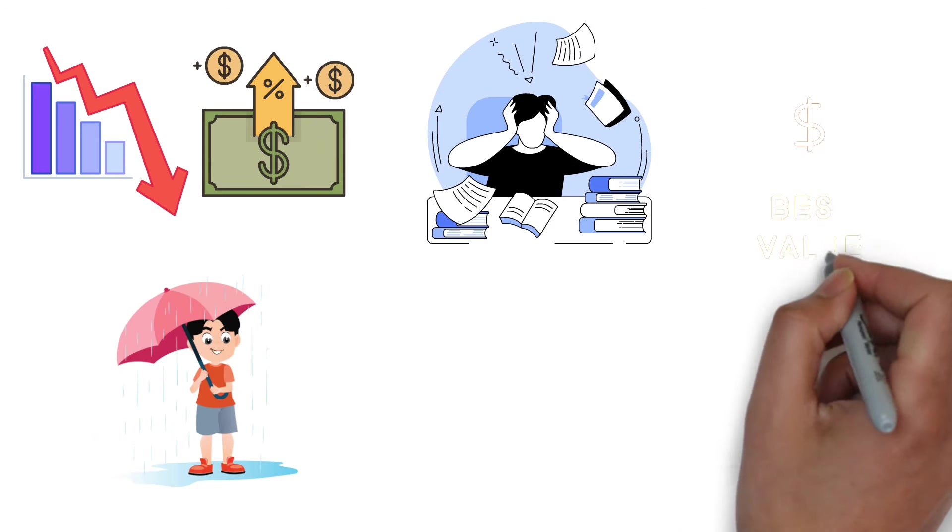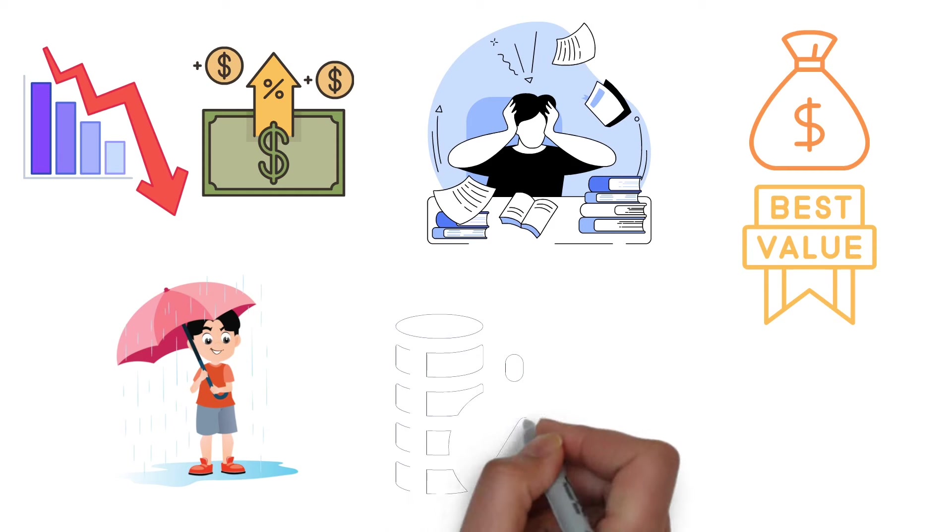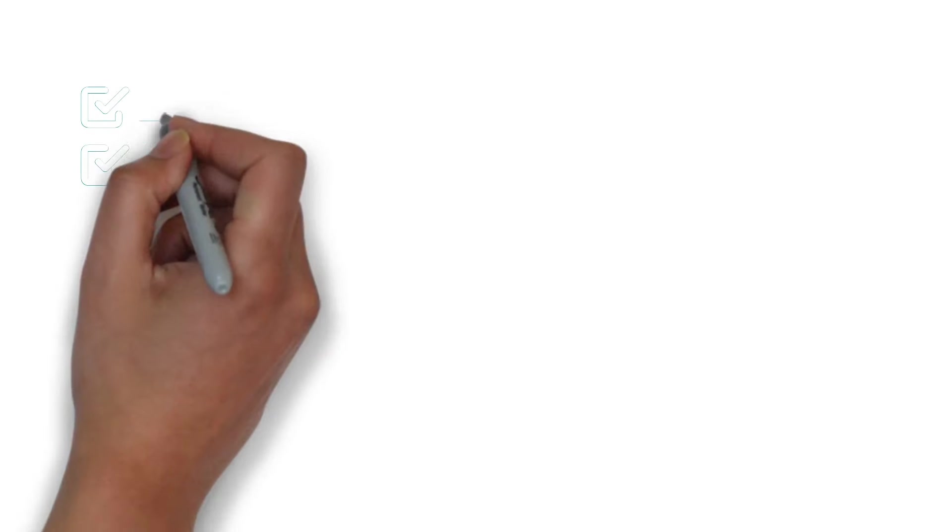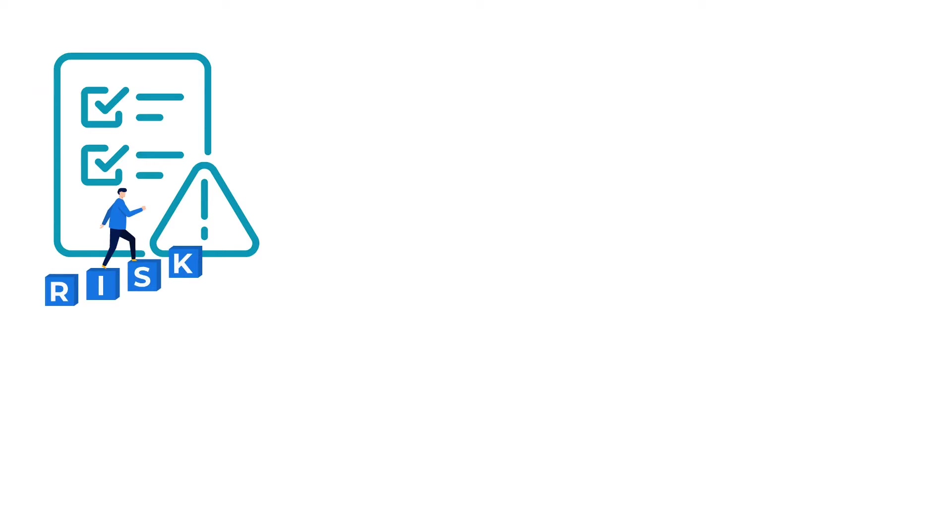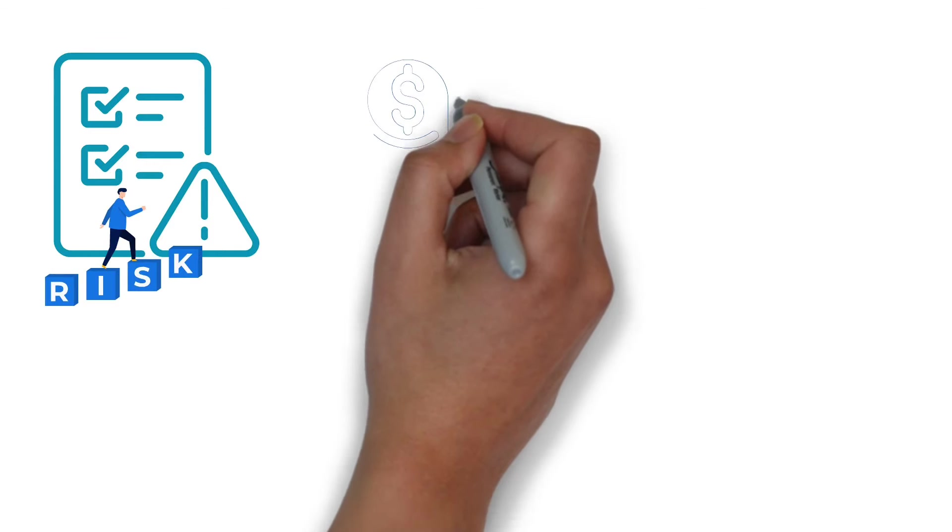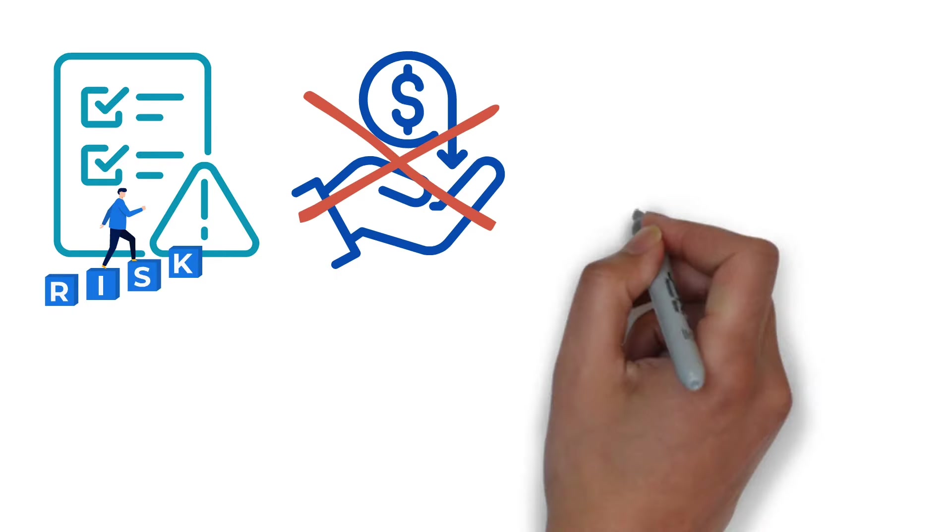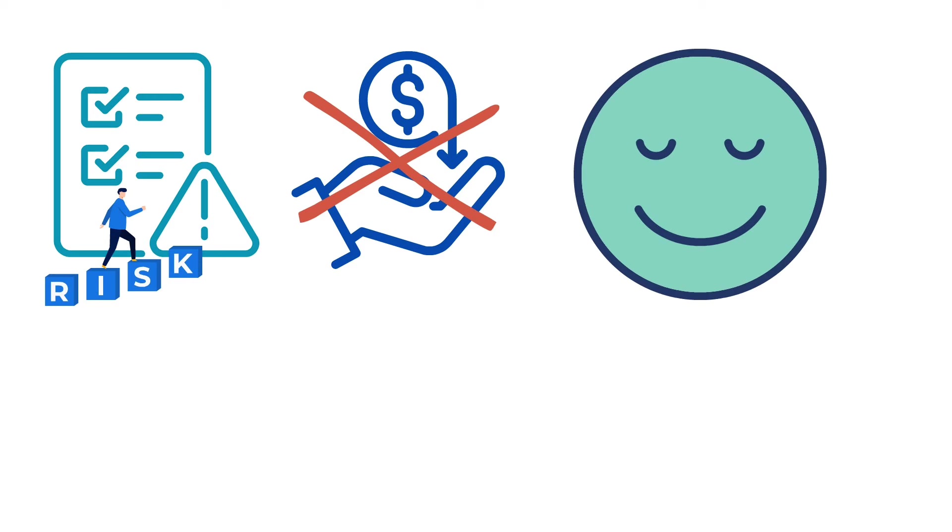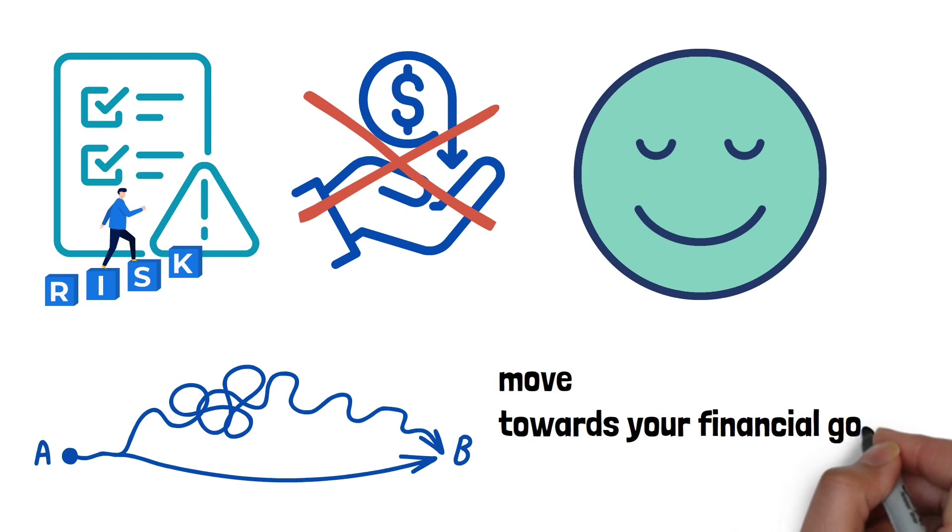Interestingly, bonds are not always just about providing income. When interest rates fall, the value of existing bonds with higher rates tend to go up. However, bonds come with their own set of risks. For instance, if interest rates go up, your existing bonds with lower rates might lose value. Also, there could be the risk that the company or government you lent money to can't pay you back. But this is quite rare, especially with government bonds. Overall, including bonds as part of your investment mix can be a way to bring some calm and predictability to your financial plan. They help smooth out the ride through the volatility of the stock market, especially as you move towards your financial goals.